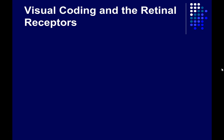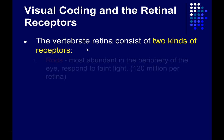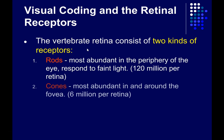Let's continue our discussion of how the retina works. The retinas of vertebrates, animals with backbones like us, consist of two classes of receptors. One is the rods, and the other is the cones.